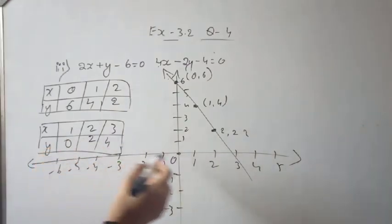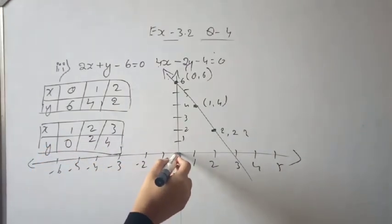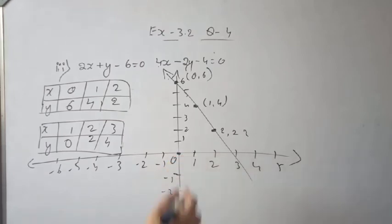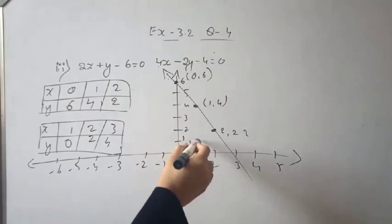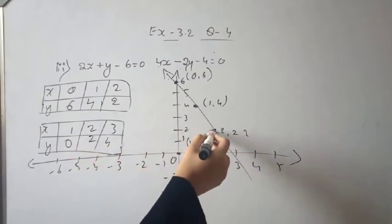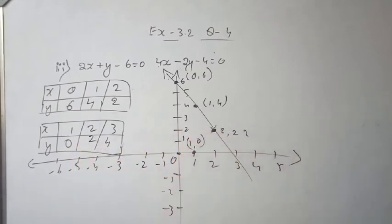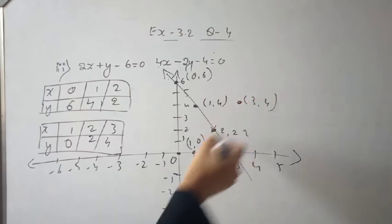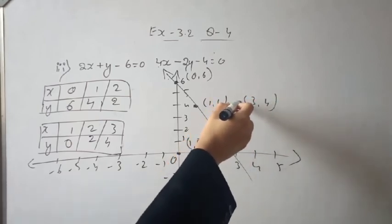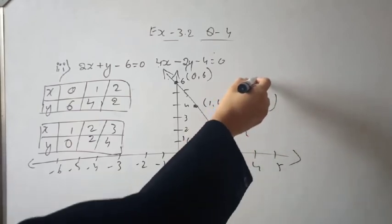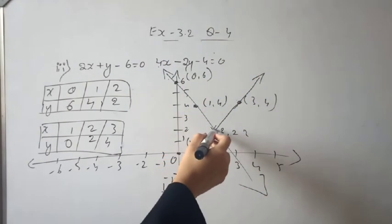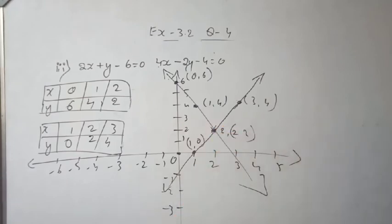For the second line: when x is 1, y is 0 — plot point (1, 0). When x is 2, y is 2 — plot point (2, 2). When x is 3, y is 4 — plot point (3, 4). Drawing the second line through these points, the two lines intersect at point (2, 2).